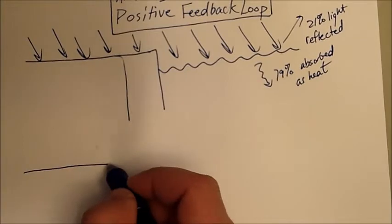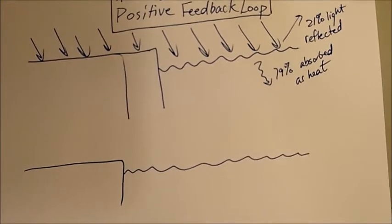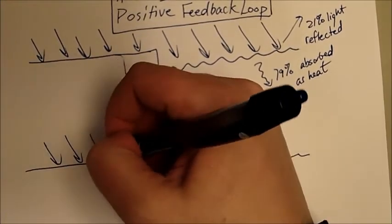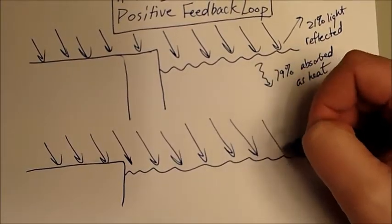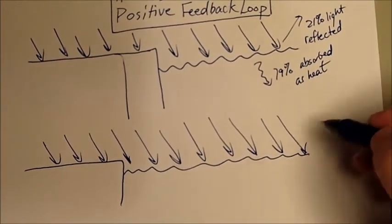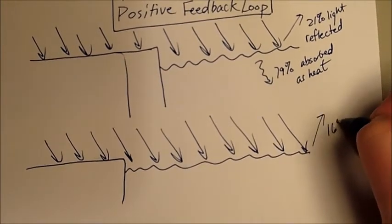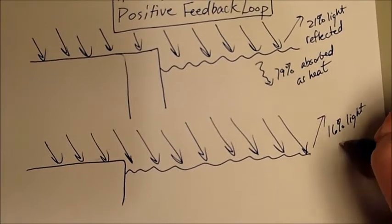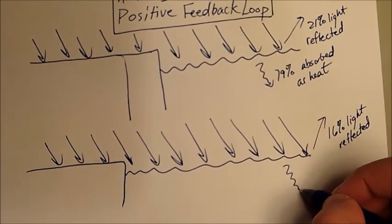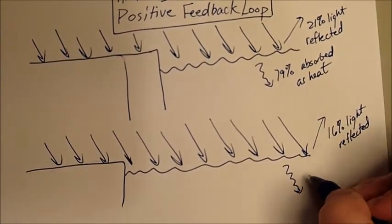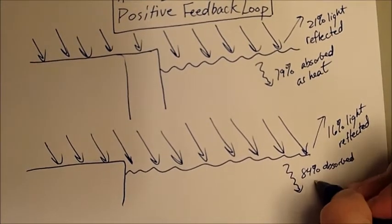So that we have now a smaller amount of ice and then more water. Again, we have light coming in. Although you notice how less light is hitting the ice and more light is hitting the water. And it ends up being that now instead of having 21% of the light reflected, we have say 16% of light reflected. This of course means that we have more light that is absorbed as heat. So that makes 84% absorbed as heat.